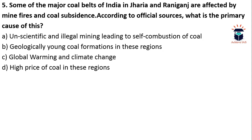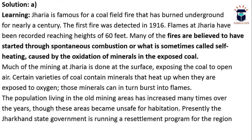Next: some major coal belts of India in Jharia and Raniganj are affected by mine fires and coal subsidence. According to official sources, what is the primary cause? A: unscientific and illegal mining leading to self-combustion of coal; B: geologically young coal formations; C: global warming and climate change; D: high price of coal. The answer is A. Jharia is famous for a coal-field fire that has burned underground for nearly a century — the first fire was detected in 1916. Flames have been recorded reaching heights of 60 feet. Fires are believed to have started through spontaneous combustion caused by oxidation of minerals in the exposed coal.